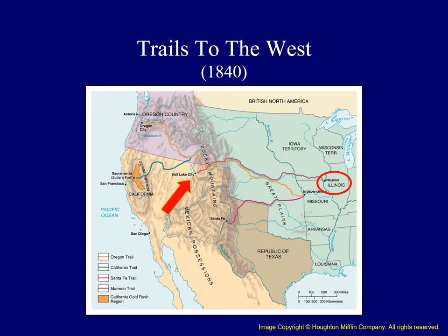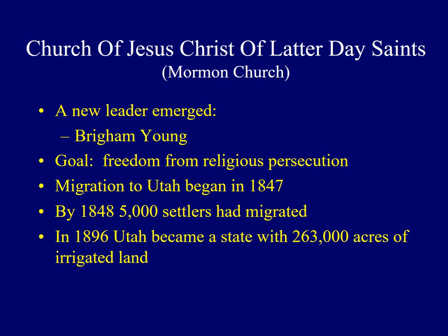Many Mormon followers compared their experiences to the Puritans who left England facing religious persecution themselves, and also sought to establish a religious utopia. Utah's harsh desert environment proved to be a difficult place to live. However, settlers in and around Salt Lake City worked together and developed innovative methods to irrigate the land. By the end of 1848, over 5,000 settlers had arrived, and when Utah finally became a state in 1896, it boasted a population of more than 200,000 with over 266,000 acres of irrigated land.